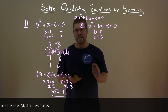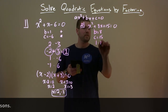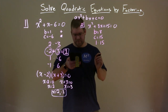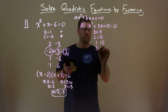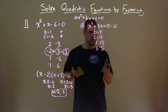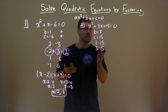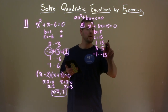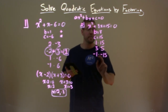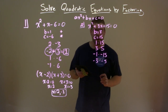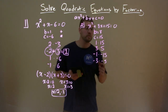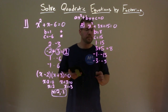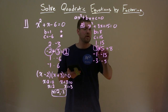We're looking at what multiplies to be 15. We have 1 times 15, 3 times 5, negative 1 times negative 15, and negative 3 times negative 5. Which one of these adds up to be 8? That's 3 and 5, since 3 plus 5 equals 8. So the two numbers we're looking for are 3 and 5.